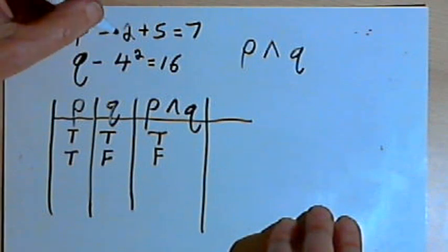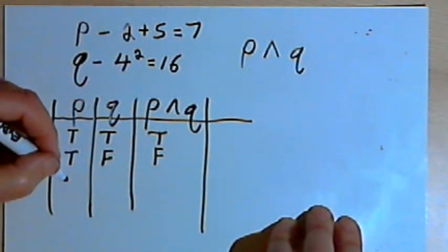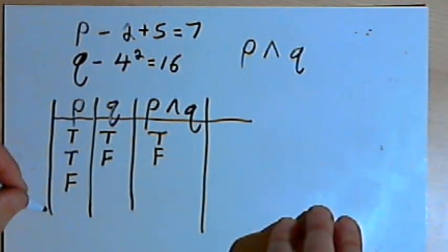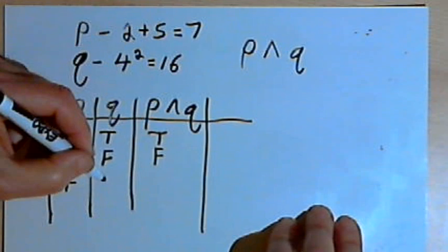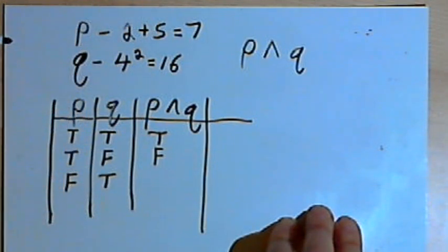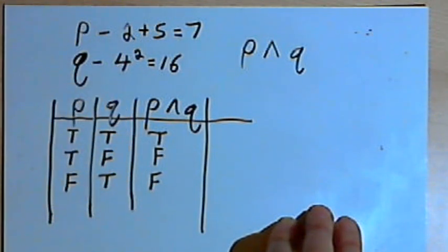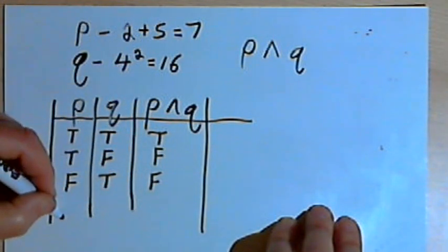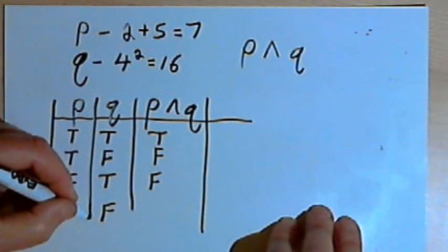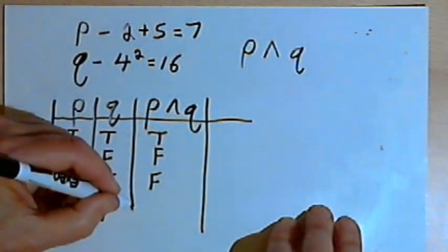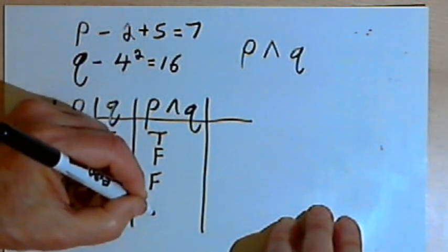If P is false but Q is true, I still don't have two true statements — they're not both true — so the conjunction is going to be false. And finally, if both statements are false, then the conjunction is also false.